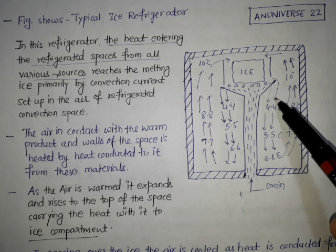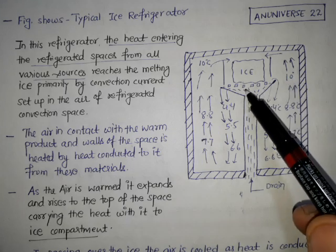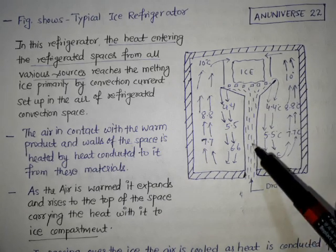At the beginning, it is cold air and by absorbing the heat, it becomes hot. When it becomes hot, it moves up. This is the portion and drainage for the ice melt.